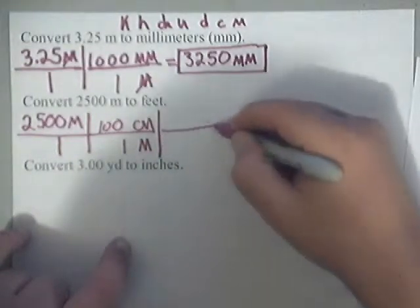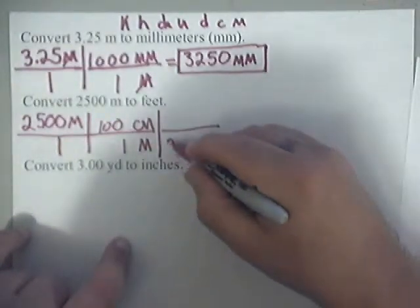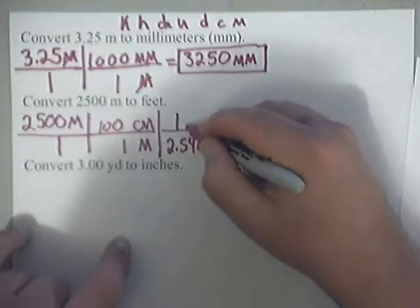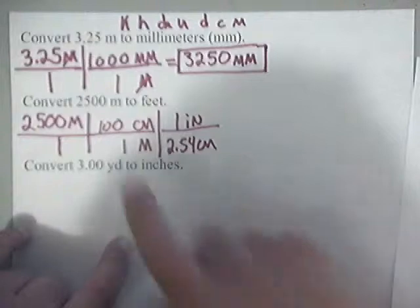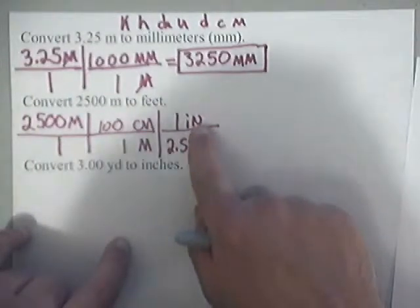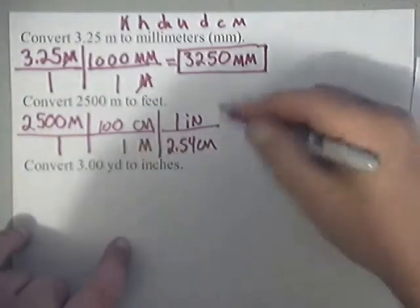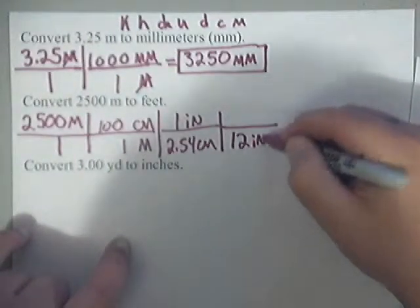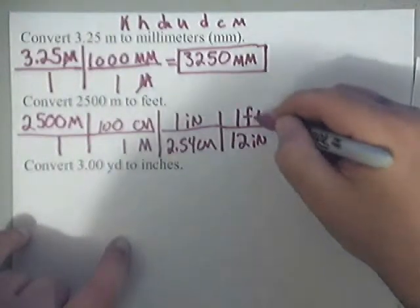But I've got to keep going. I know that there are 2.54 centimeters and 1 inch. Now notice that I still have inches on top. I don't have feet yet, but I do know this. I know that there are 12 inches and 1 foot.